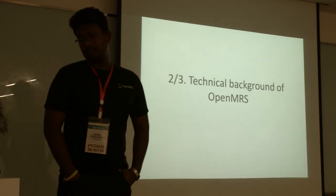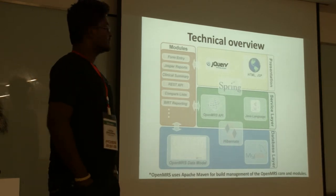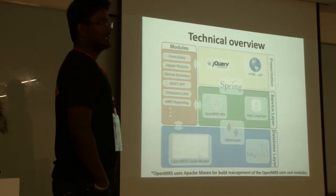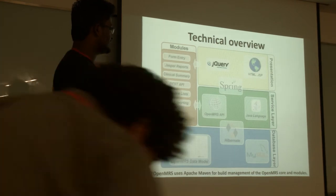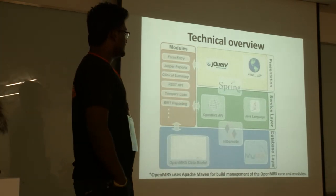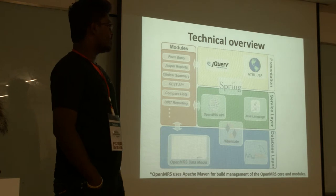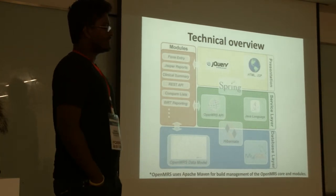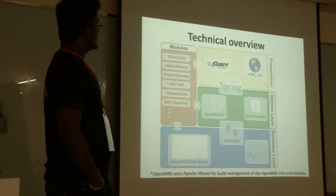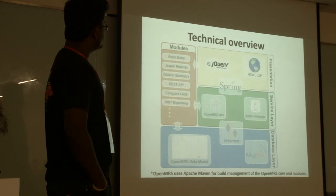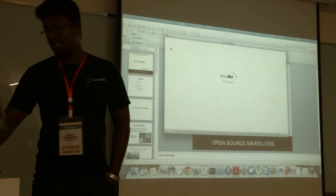I will give you a brief technical background of the OpenMRS system. It's basically written in Java and related technologies. It's using Spring MVC and Hibernate object-relational mapping. It has a separate OpenMRS framework built upon Java APIs and a REST API for web services. For form collection, it has separate modules like XForms and HTML forms.